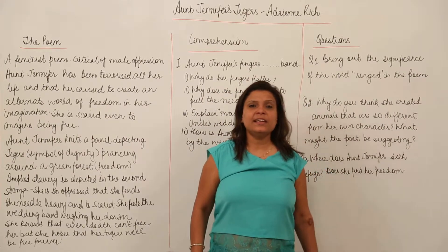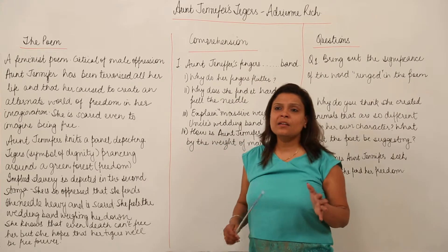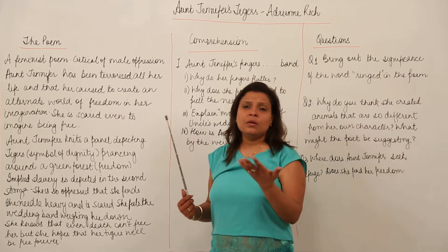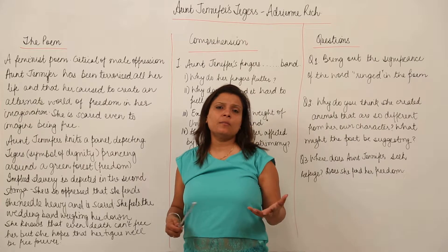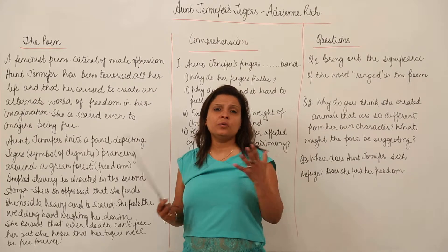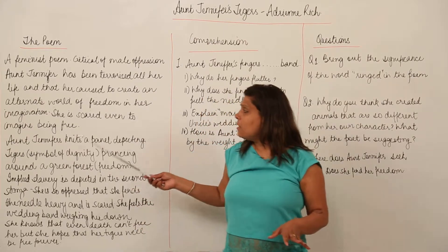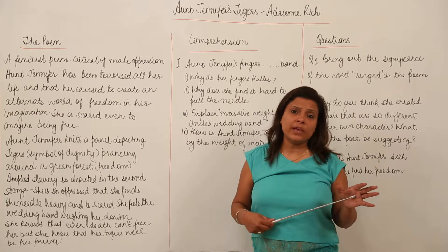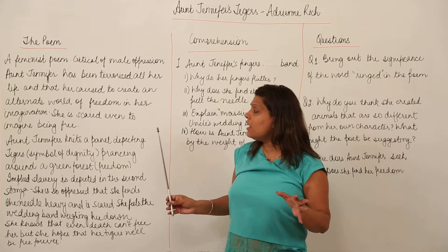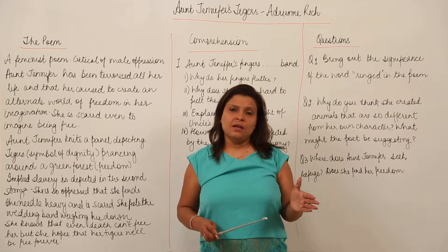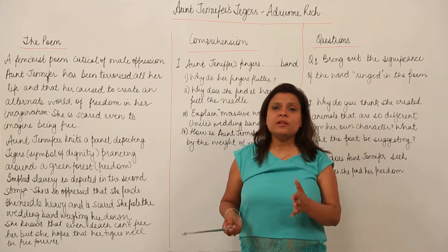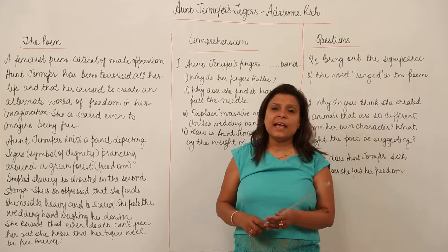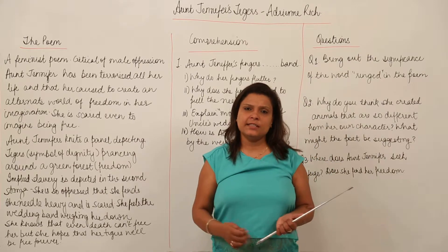prancing regally, majestically, and she in fact transfers her own feelings of escaping from that oppression into the tigers. But as we go through the poem, we see that she is scared even to imagine being free. The tigers are her symbol of freedom but she is scared to knit those tigers even.